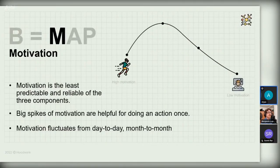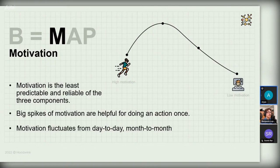Looking at the first aspect of the Fogg Behavior Model — M for motivation. Motivation is the least predictable and reliable of the three components. Motivation stops being reliable after a few days; you can rely on it to do an action once and that's about it. Motivation is very scattered and unsustainable — at some point your motivation will sag as it fluctuates from day to day or month to month.